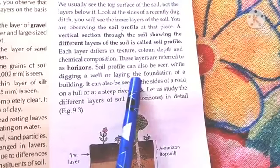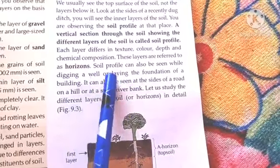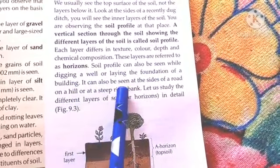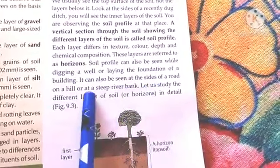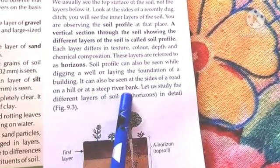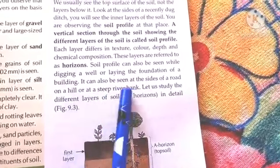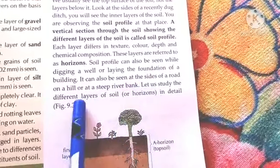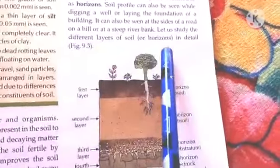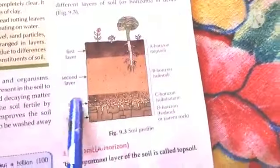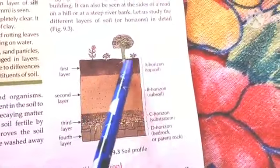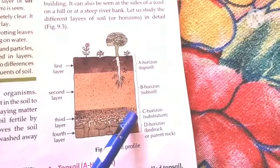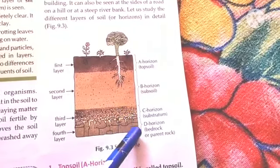Soil profiles can also be seen while digging a well, laying the foundation of a building, at the side of a road, on a hill, or at a steep riverbank. In the soil profile diagram from the book, we have A-horizon (topsoil), B-horizon (sub-soil), C-horizon (substratum), and D-horizon (bedrock).